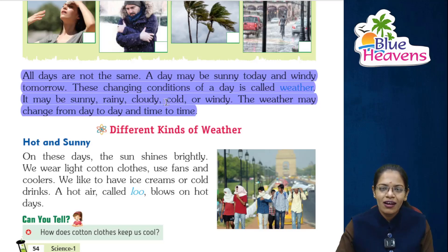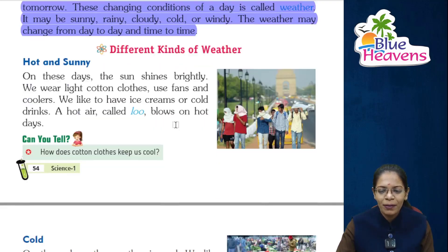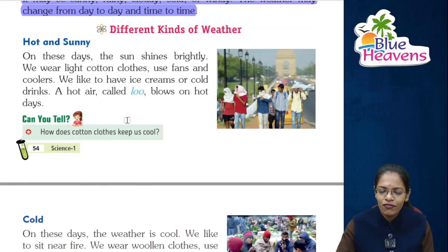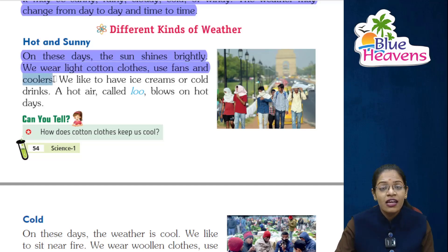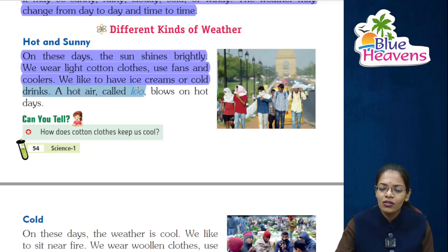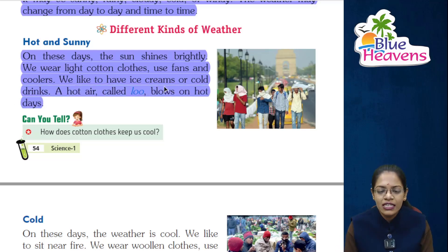Now students, let's start our first topic: different kinds of weather. First one is hot and sunny. On these days the sun shines brightly. We wear light cotton clothes, use fans and coolers, and we like to have ice creams and cold drinks. A hot air called loo blows on hot days. Now students, look at the image of a hot and sunny day.